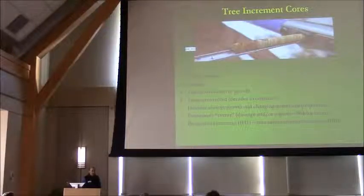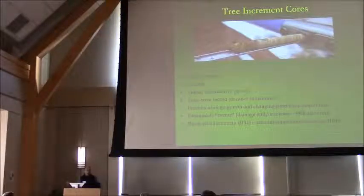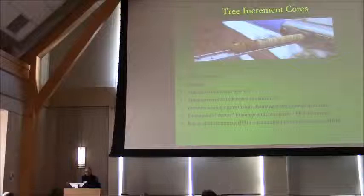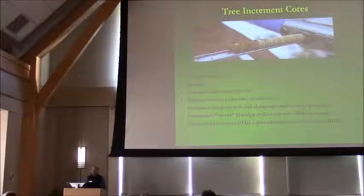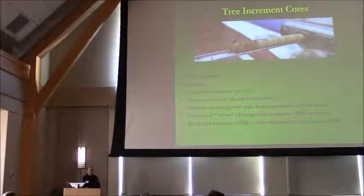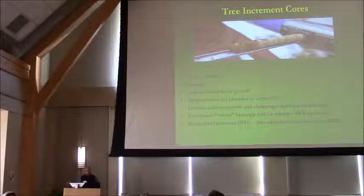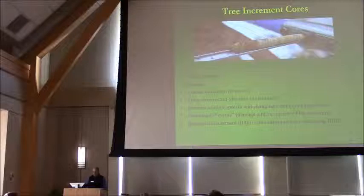This is tree increment core data, as opposed to inventory data. It's easy to collect but rather hard to interpret or measure sometimes. Importantly, it's dateable in annual growth increments, so you actually get a long-term record of year-to-year changes in growth that could span decades or centuries. It also lets you look at events like a release or a damage event like the 1998 ice storm.